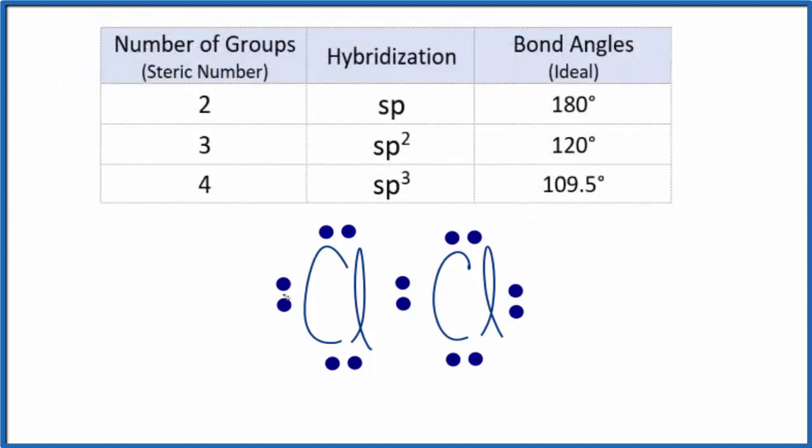So when we look at the chlorine, let's look at this chlorine right here. We're looking for the number of groups, the number of things attached around this chlorine. So we can see we have this right here, that's one. And then we have one, two, three lone pairs. So we have a total of four things around the chlorine.